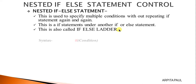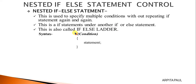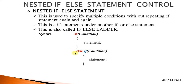Let me show you the syntax of this if-else ladder. First we write our if statement, and within brackets we provide the condition. If the condition is true, it will execute the statement part. If it is false, it will go to the else part of this if statement. So now we write the else part.